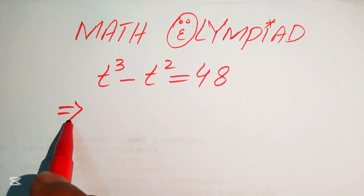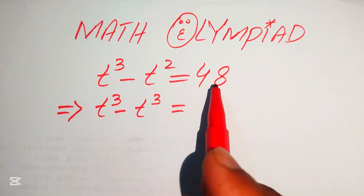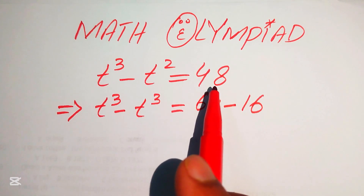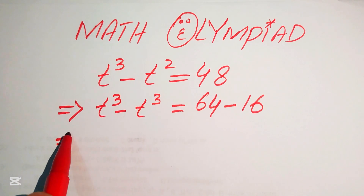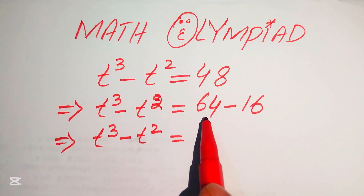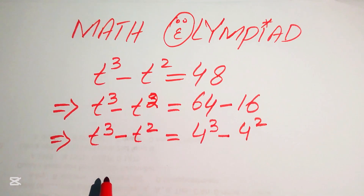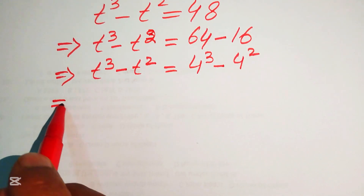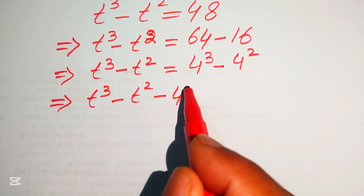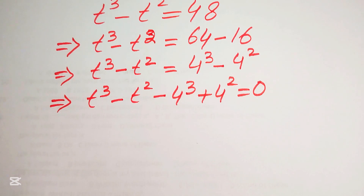First we focus on the right hand side: t cubed minus t squared equals 48, and we rewrite 48 as 64 minus 16. We know 64 minus 16 equals 48. Now we rewrite the terms: t cubed minus t squared equals 4 cubed minus 4 squared. We move these two terms to the left hand side, giving t cubed minus t squared minus 4 cubed plus 4 squared equals 0.